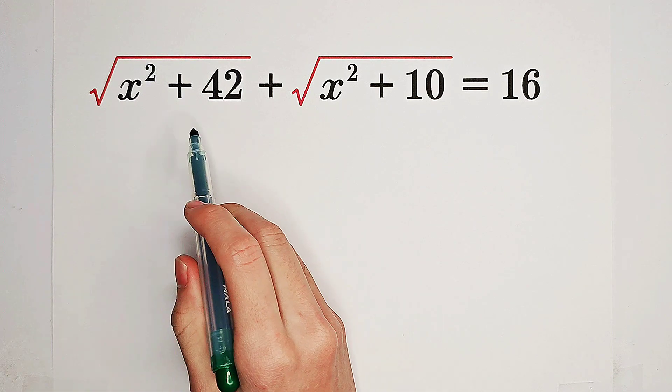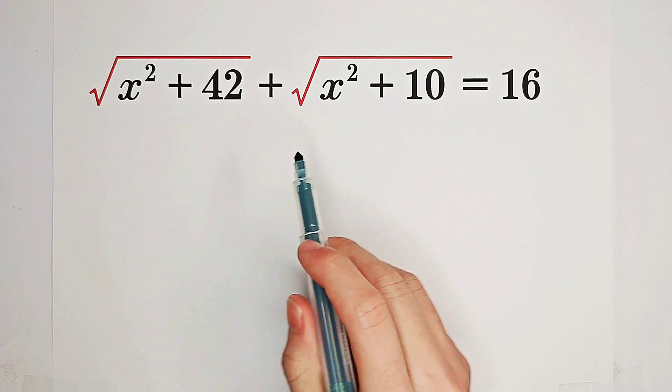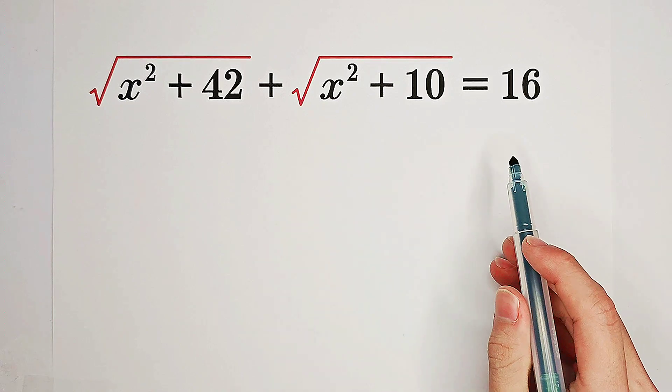Solve for x such that square root of x squared plus 42 plus square root of x squared plus 10 equals 16.